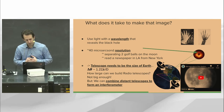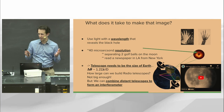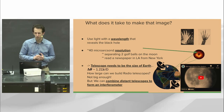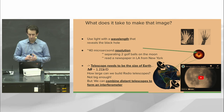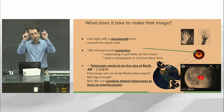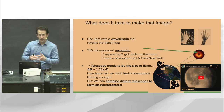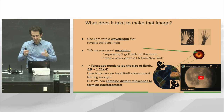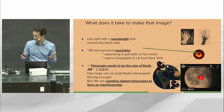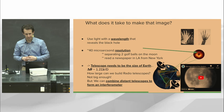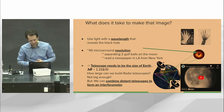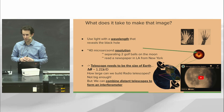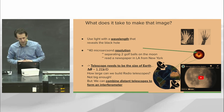The resolution we need turns out to be 40 microarcseconds. To make that tangible: you can think of putting two golf balls right next to each other on the Moon and looking at them from Earth. The angle between the left side of the left golf ball and the right side of the right golf ball, as viewed from Earth, is about 40 microarcseconds. Alternatively, you could try to read a newspaper while standing in LA with the newspaper in New York City. It's very, very precise.